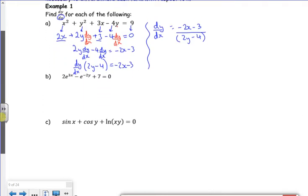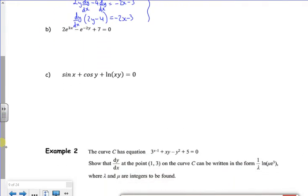Right. Let's have a look at the next one. So 2e to the 3x. So you know if it's e to the f of x, that goes to f dashed of x, e to the f of x. So that's going to be 2 times by 3e to the 3x. That's a 3 there.